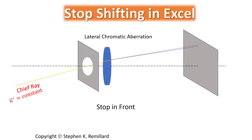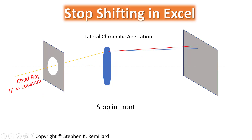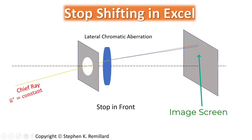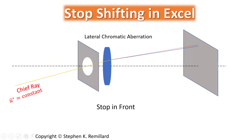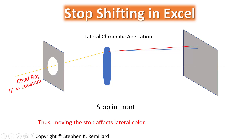Lateral color is affected by moving a stop. The chief ray is always the ray that pierces the center of the entrance pupil. If you move the aperture stop, you move the entrance pupil and select a different chief ray. Because they are different chief rays, they strike the lens at different heights, split a different amount, and you end up with a different splitting on the image between the different components of the light. That separation in height of the image surface pierce of the different colors is lateral color. Thus, moving the stop does affect lateral color.